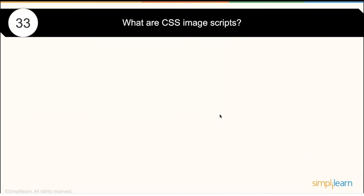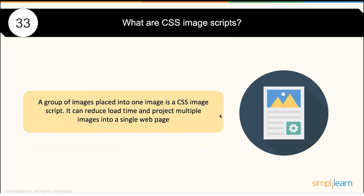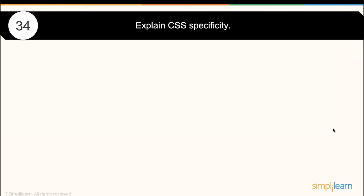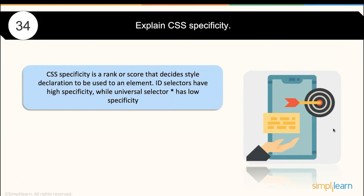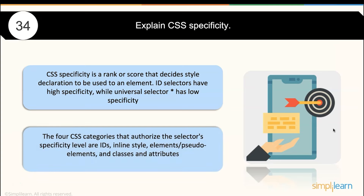What are CSS image sprites? A group of images placed into one single image is a CSS image sprite. It can reduce load time because individual images take more time to download. Regarding CSS specificity: specificity is a rank or score that decides which style declaration is applied to an element. ID selectors have high specificity while universal selectors have low specificity. The four CSS categories that determine specificity are IDs, inline elements, pseudo and class selectors, and style attributes.